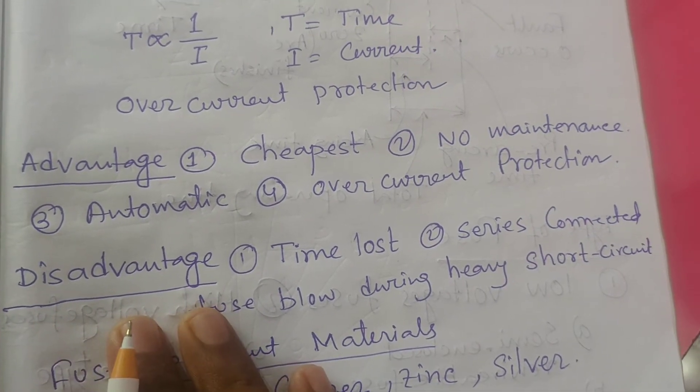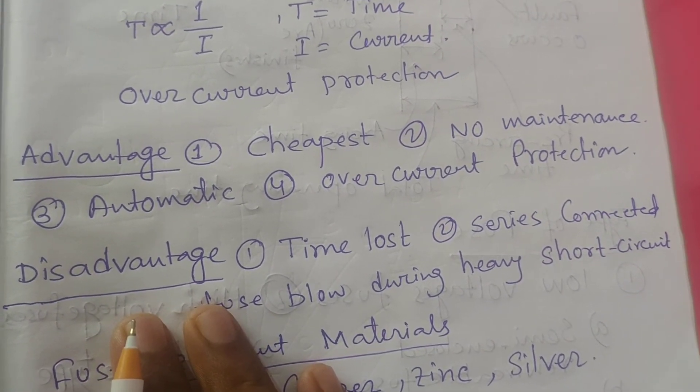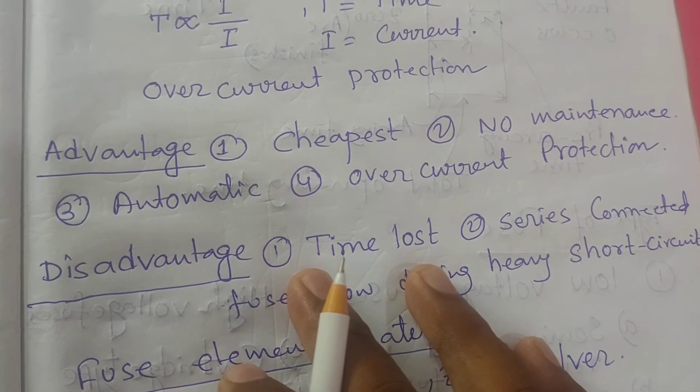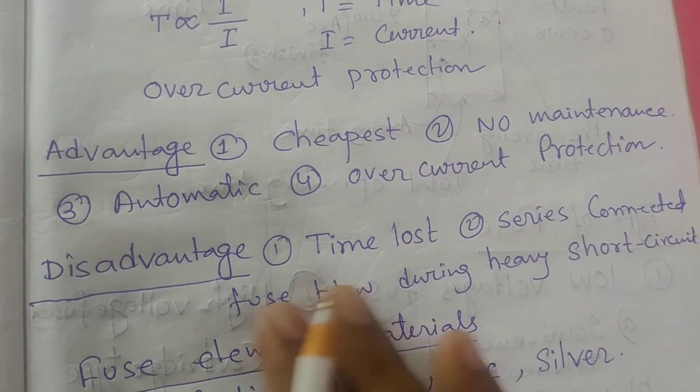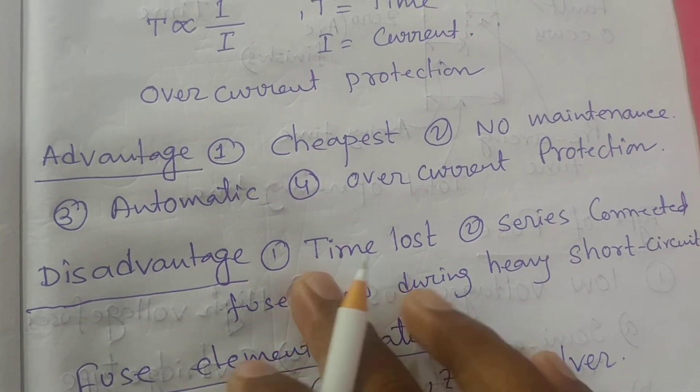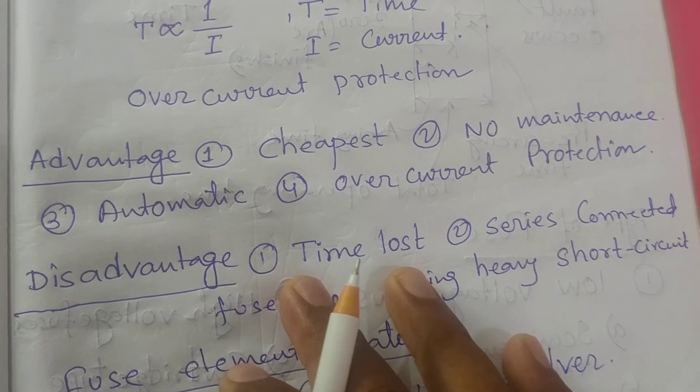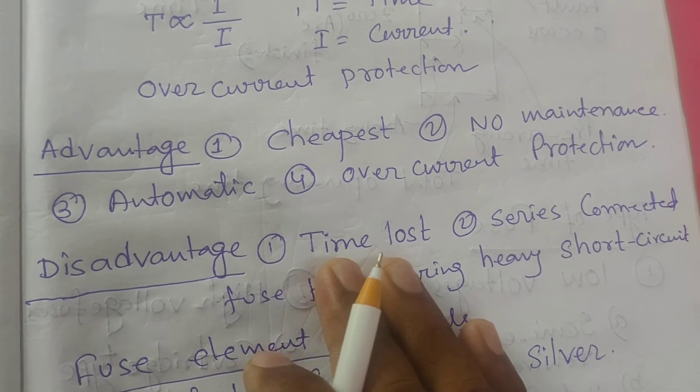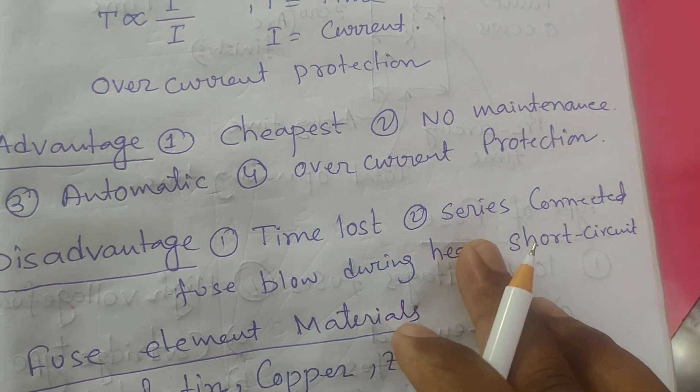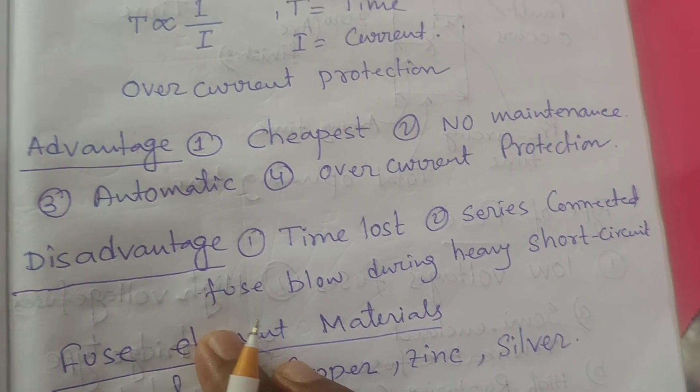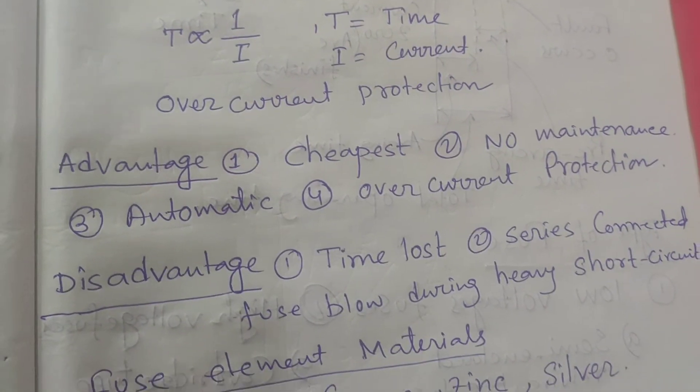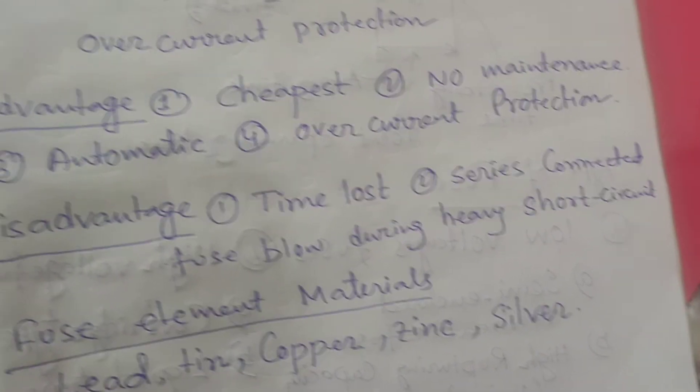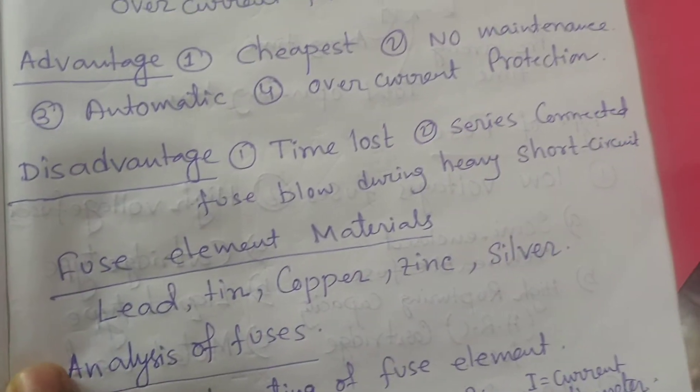There are a lot of disadvantages. Time is lost because when the fuse blows out, if you want to normalize your line, you have to replace the fuse material, so it takes time to normalize the system. The series-connected fuse blows due to heavy short circuit. If there is a heavy short circuit and you connected the fuse in series circuit, then all the fuses may blow, so that will be a very hard procedure to normalize the required lines.